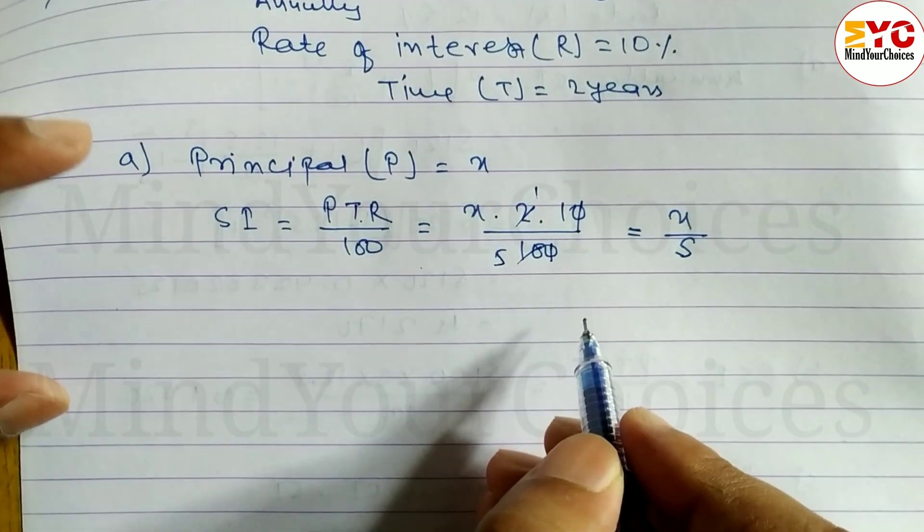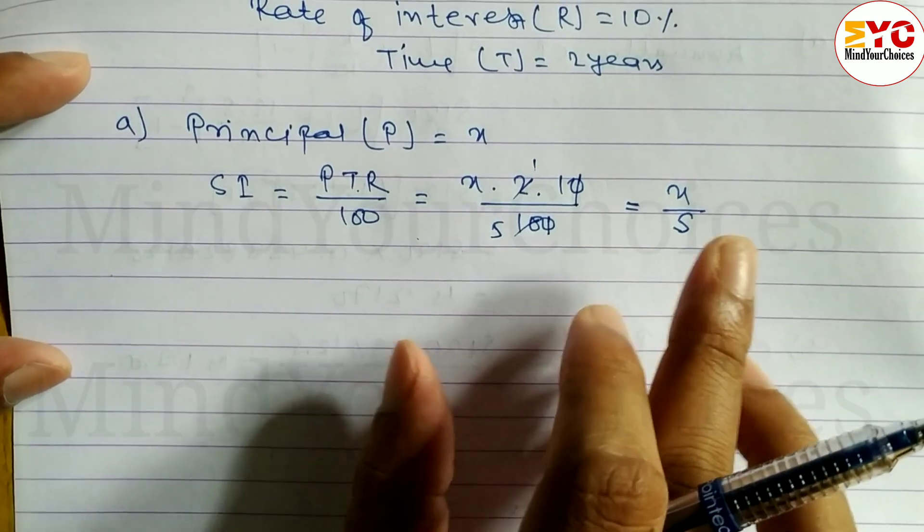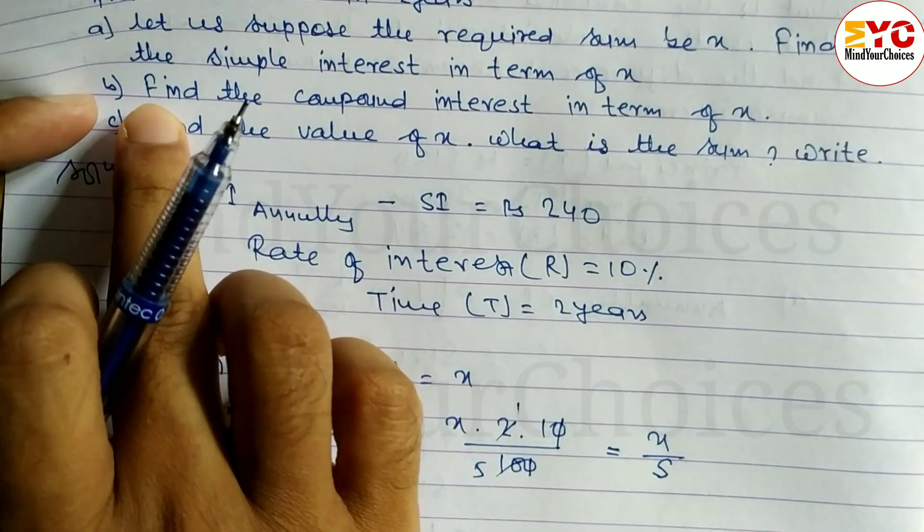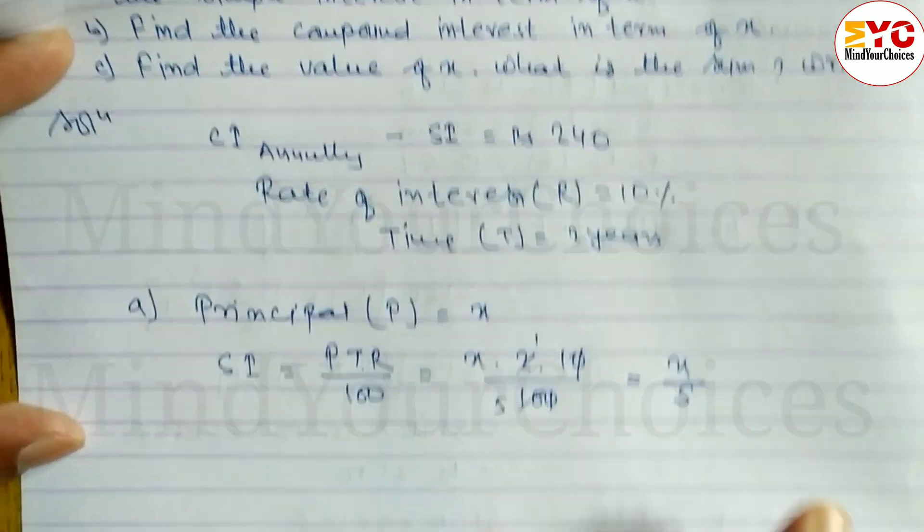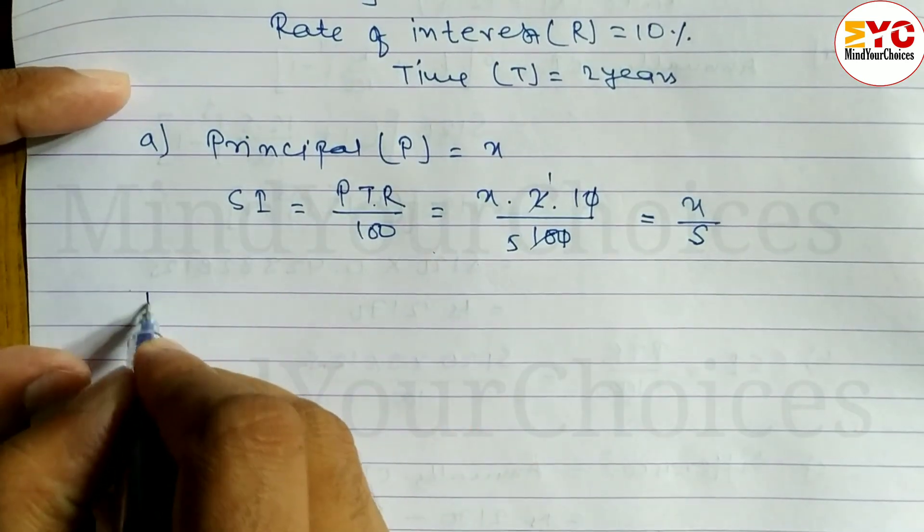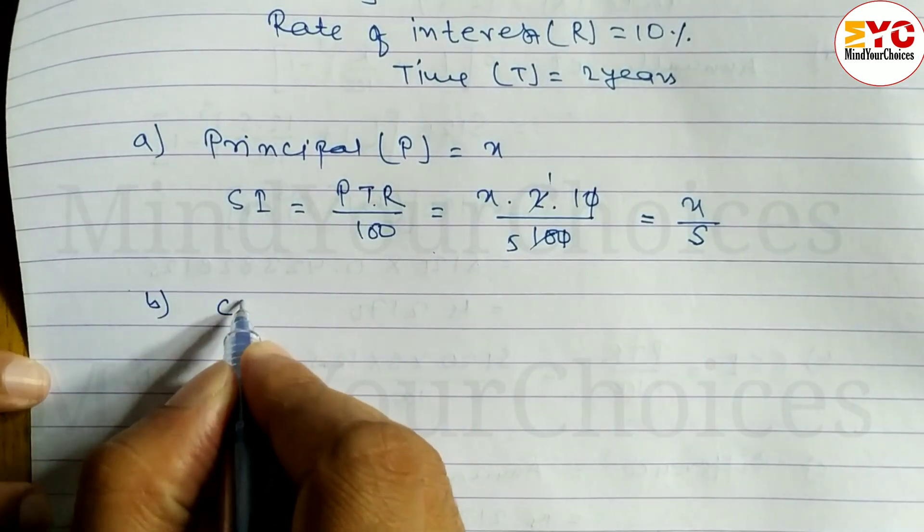The simple interest value is x by 5. This was number b: find the compound interest in term of x. Now how to find compound interest in term of x? CI annually...